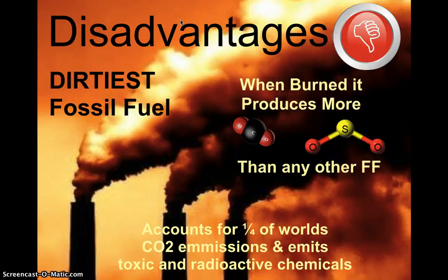Coal accounts for one-fourth of the world's carbon dioxide emissions, which is a greenhouse gas, contributing to concerns about greenhouse gas and global warming. Sulfur oxides, which are mainly found in coal, lead to acid rain and smog. Coal also emits toxic and radioactive chemicals.